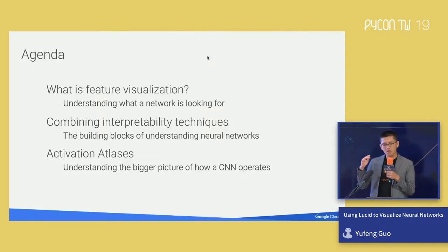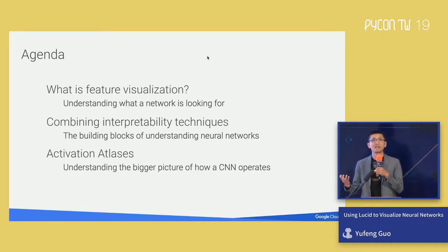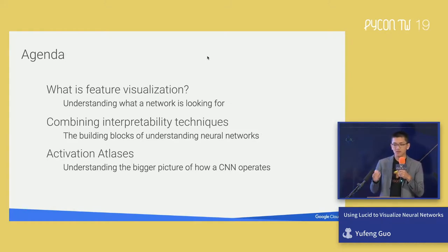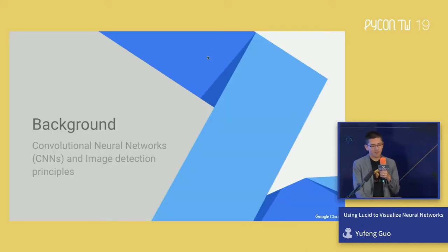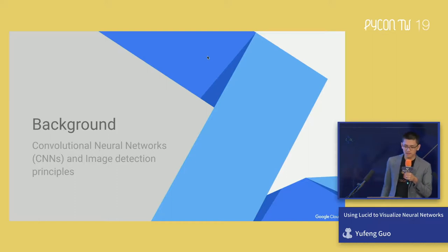Today we'll talk through three stages leading to a new tool called Activation Atlases, which brings new insight into what's happening inside a neural network when an image is passed in. We're relatively short on time, so I'll try to move fairly quickly. First, just a little bit of background to set the stage and get everyone on the same page around terminology.